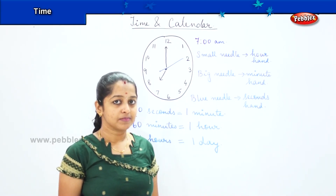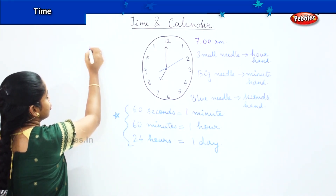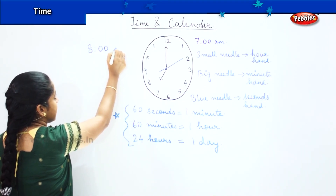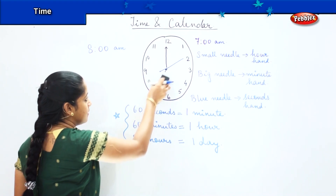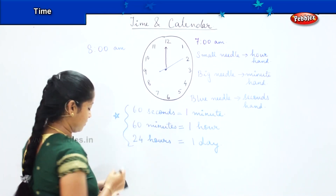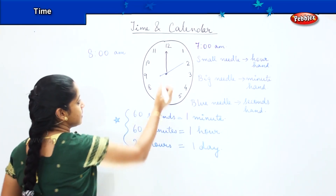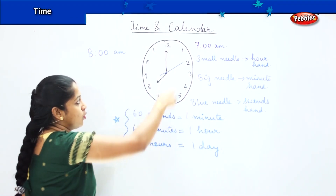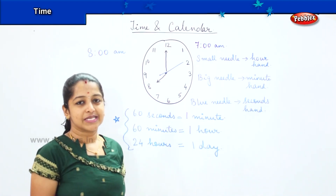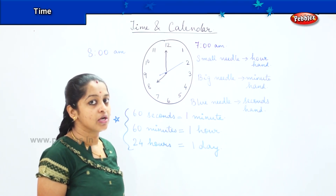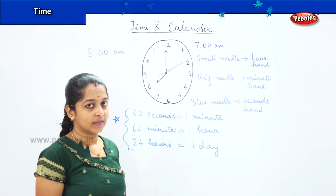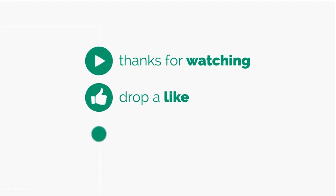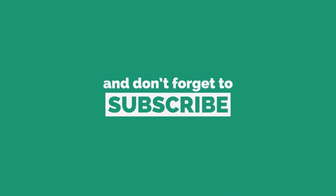Are you clear, children? Shall we do some timing problems? I want you to draw 8 a.m. on the clock — how will you draw it? You will be moving the small needle from 7 to 8. So how long will it take to go from 7 o'clock to 8 o'clock? We can say it takes 60 minutes, or it takes one hour to move one hour forward. Shall we do some sums based on this?